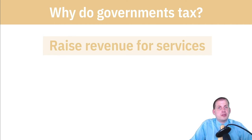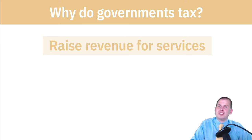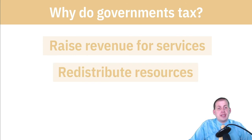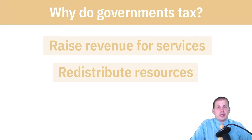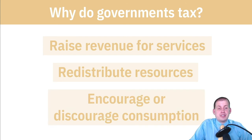Often governments tax to raise revenue for services. Public schools in the United States are funded by property taxes, which leads to inequality because poorer neighborhoods with lower property values get fewer property tax revenues and worse schools. In general, governments tax to raise revenues to provide public goods. Governments also tax to redistribute resources — funding things like Medicare, Medicaid, the Earned Income Tax Credit, SNAP benefits, and WIC — moving money from richer to poorer people.